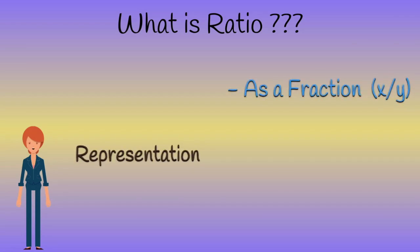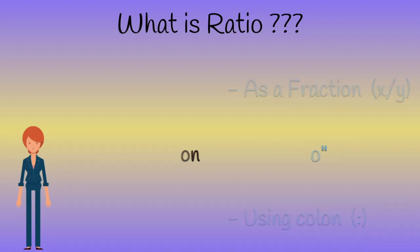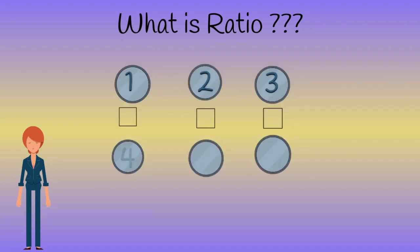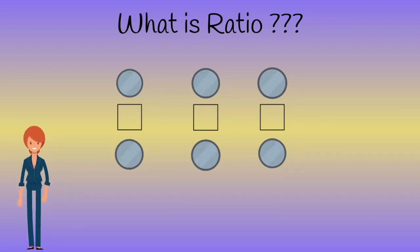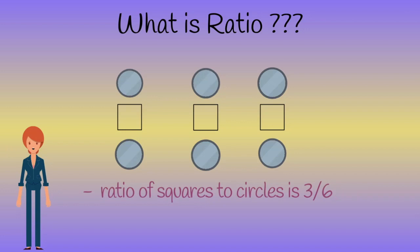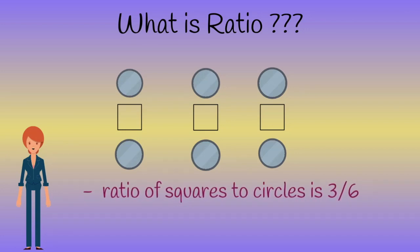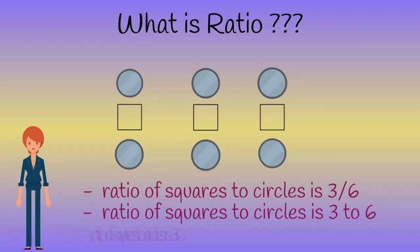Let us consider the following shapes to learn more about ratios. How can we write the ratio of squares to circles? The most common way to write a ratio is as a fraction, three by six. We could also write it using the word 'to' as three to six. Finally, we could write this ratio using a colon between the two numbers, three to six.